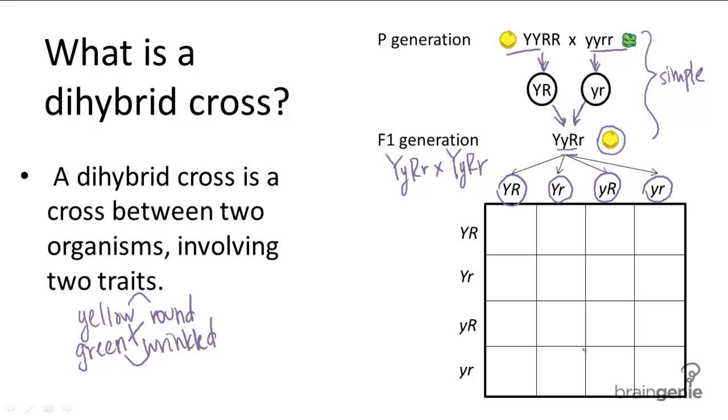So let's first walk through the first row together for how to fill this out. It's just like the monohybrid cross Punnett square. You have big Y, big Y, big R, big R here. Big Y, big Y, big R, little r here. Big Y, little y, big R, big R. And then big Y, little y, big R, little r.